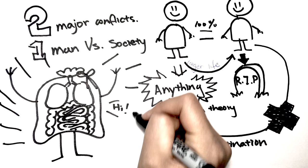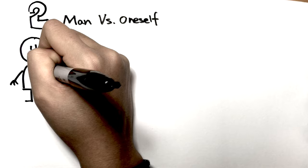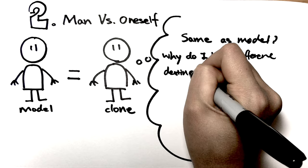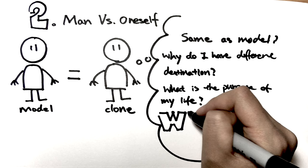The second conflict in the novel is man versus oneself. Because the clones are exactly the same as their models, it leads to the clones to question about their own existence. Questions such as: am I the same as my model? If yes, why do I have a different future? What is the purpose of my life? These questions all lead to the final problem. That is, who am I?